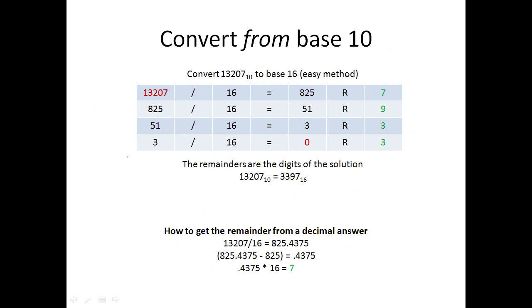Now if you want to convert from base 10, take the number, so 13207 base 10, and divide it by the base you're converting to, base 16. It helps to organize this in a table. So 13207 divided by 16, and you want to record the result and the remainder. The remainder is very important, so keep this organized.